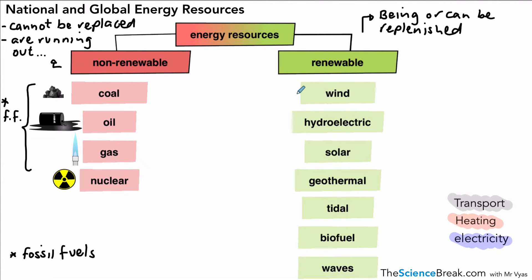The seven renewable energy resources are: wind, hydroelectric, solar, geothermal, tidal, biofuel and waves. Now we need to be able to explain or describe why we need these different types — they are basically for transport, for heating and for electricity.